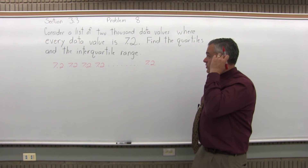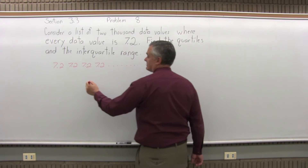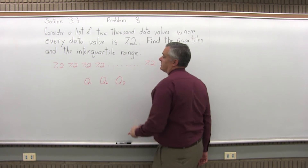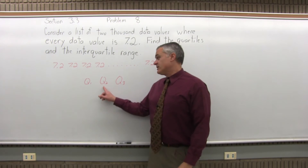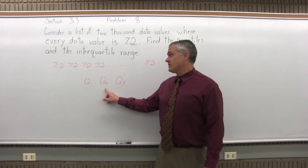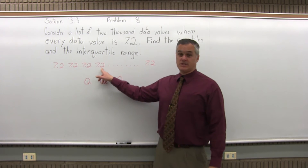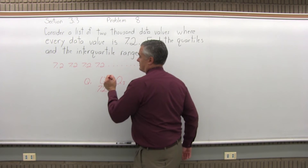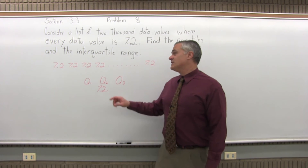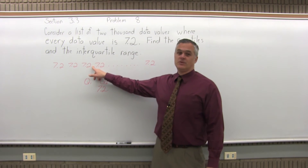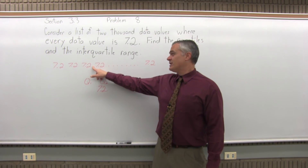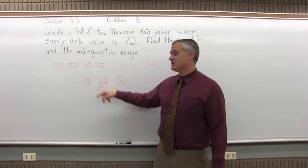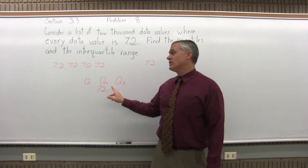So the quartiles: Q1, Q2, Q3. Typically you find Q2 first by finding the midpoint of the list. Well, the midpoint is going to be 7.2. If there are 2,000 values, technically it's the space between position number 999 and position number 1,000, which is also 7.2.